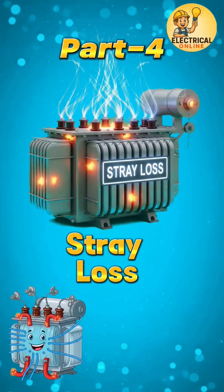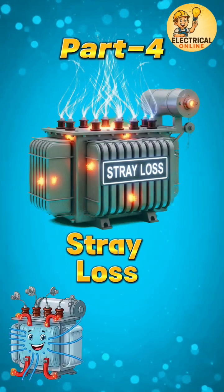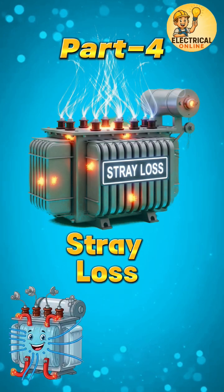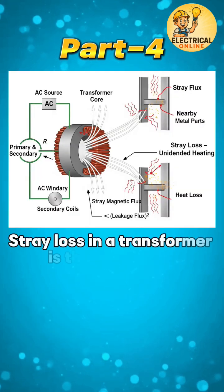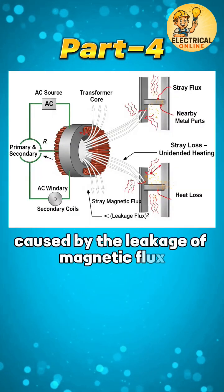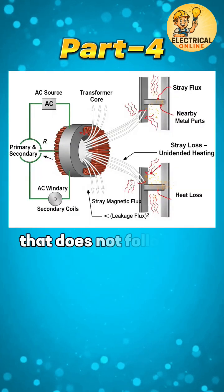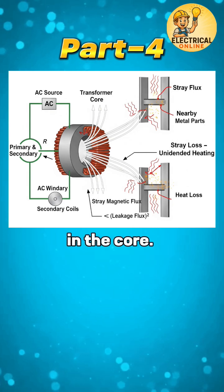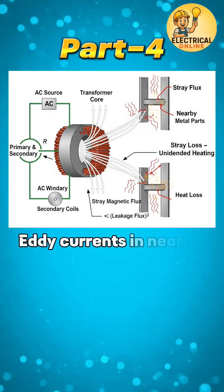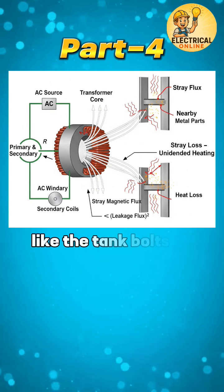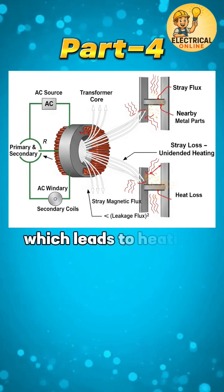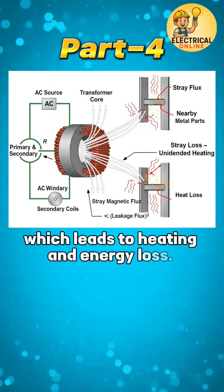Now let's talk about a magnetic rebel: stray loss, caused by flux that escapes the core. Stray loss in a transformer is the power loss caused by the leakage of magnetic flux that does not follow the intended path in the core. This stray magnetic field induces eddy currents in nearby metallic parts like the tank, bolts, or structural supports, which leads to heating and energy loss.